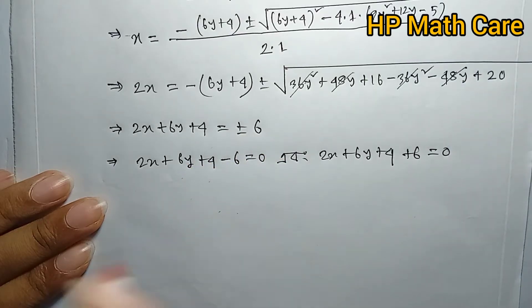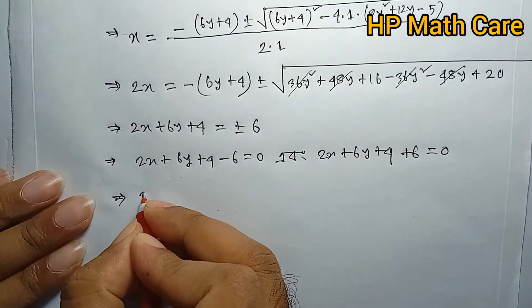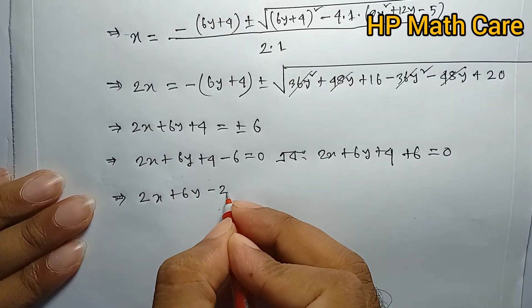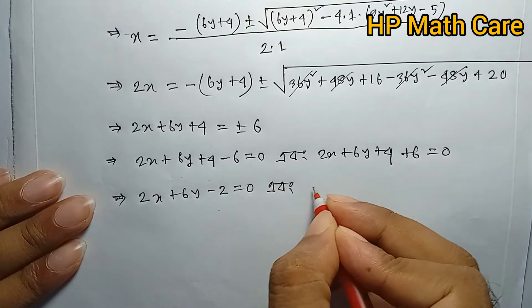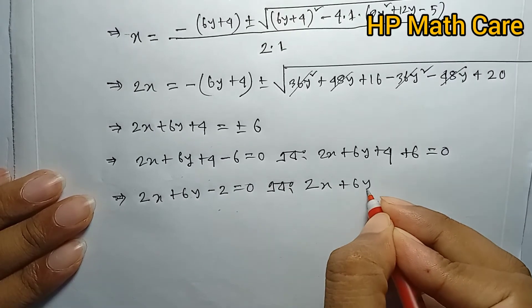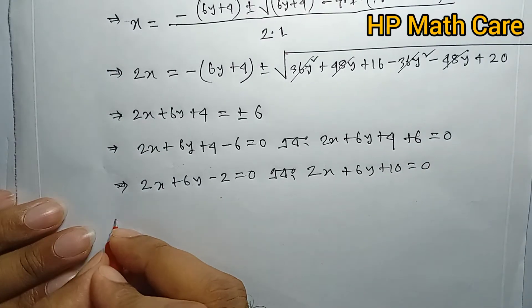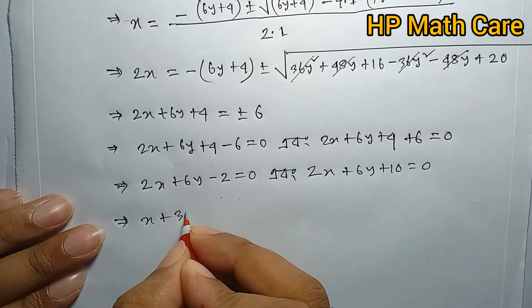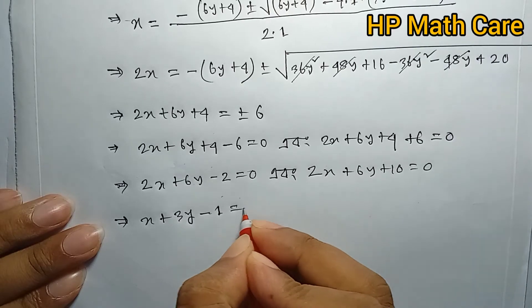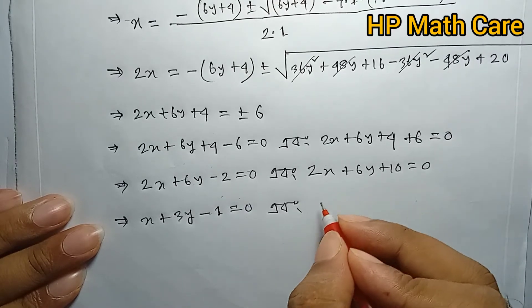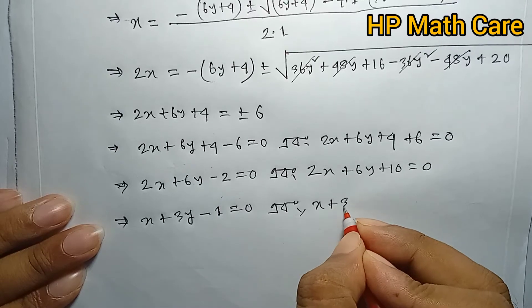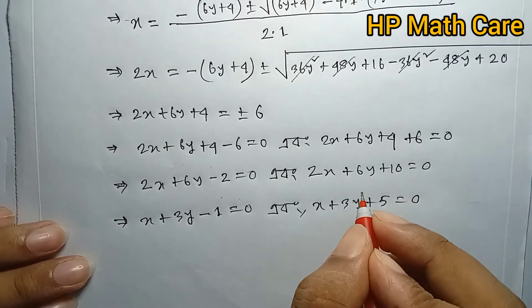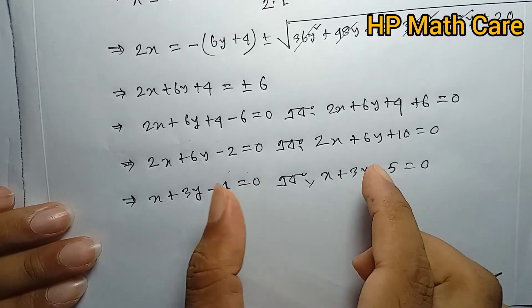The factored form gives us: 2x plus 6y plus 10 equals zero, and the other factor: x plus 3y minus 1 equals zero. Simplifying further: x plus 3y plus 5 equals zero. These are our two straight lines.